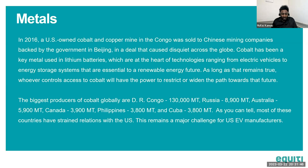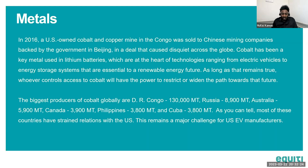The biggest producers of cobalt are: the Democratic Republic of Congo at 130,000 metric tons, Russia at 8,900 metric tons, Australia at 5,900 metric tons, Canada at 3,900 metric tons, Philippines at 3,800 metric tons, and Cuba at 3,800 metric tons. Mining in Congo is now driving supply mostly to China. Russia and Cuba have strained relations with the US, meaning this cobalt doesn't flow to US companies — remaining a major challenge for US EV manufacturers.